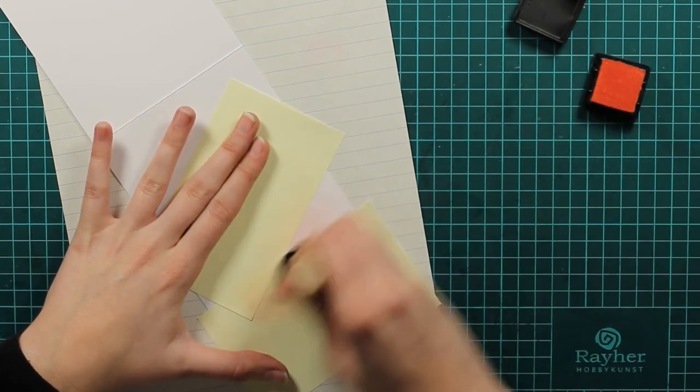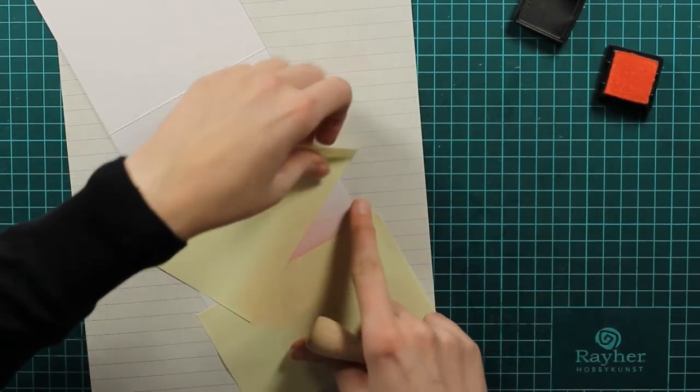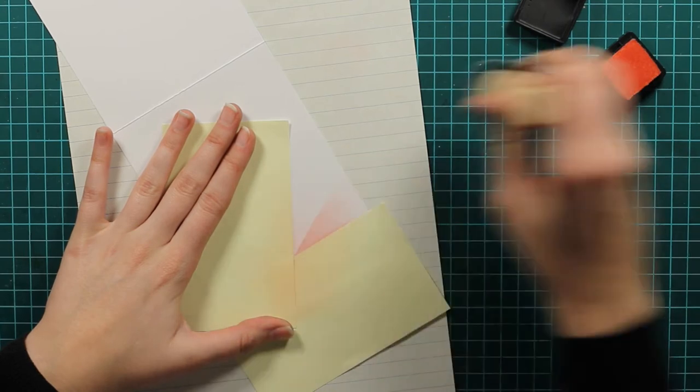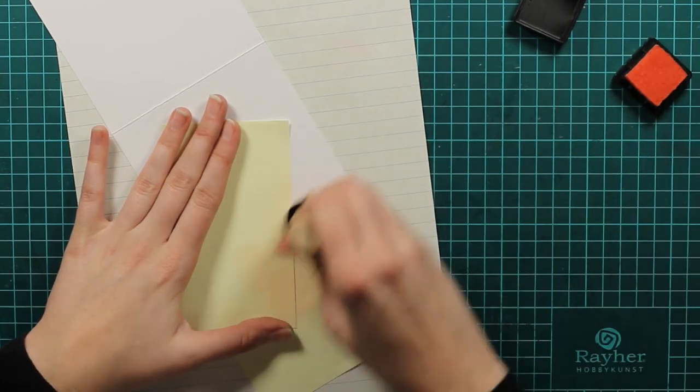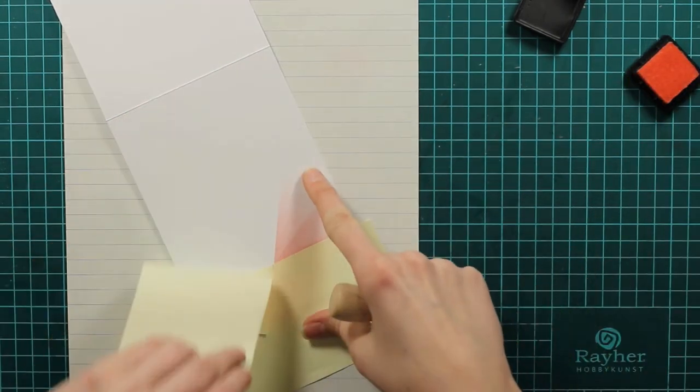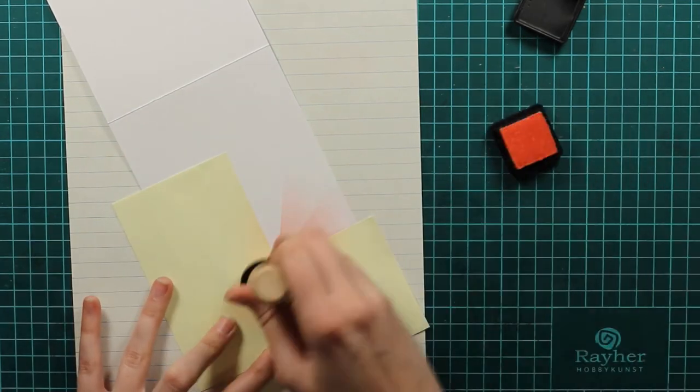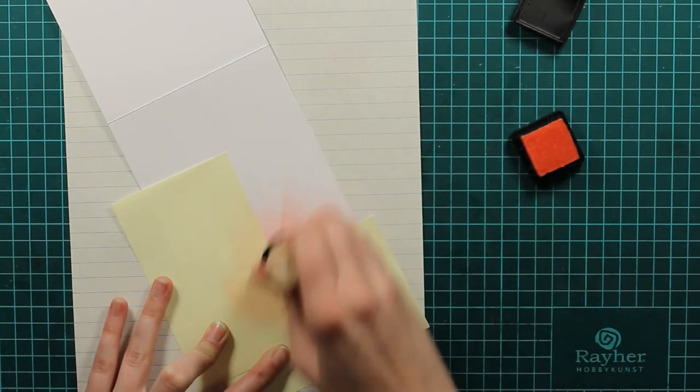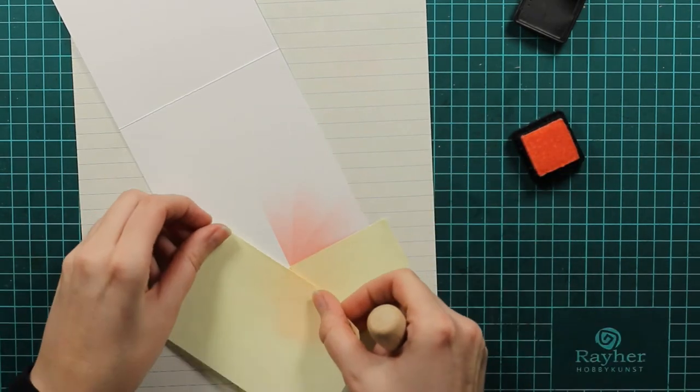If you are asking yourself why I use the bottom layer of post-it if we will actually cover it up with the piece of white cardstock that we made before, I can tell you that I use it because I wanted to know for sure where the middle is and that's the easiest way to do it.